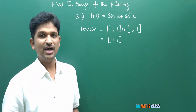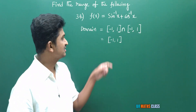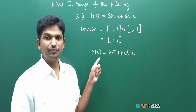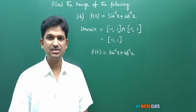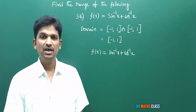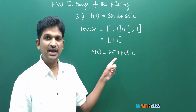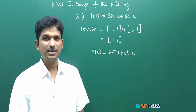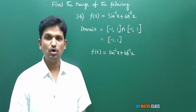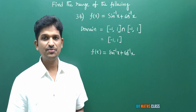So the domain of sin⁻¹x + cos⁻¹x is the closed interval [−1, 1]. To find the range, we use the property from inverse trigonometric functions: sin⁻¹x + cos⁻¹x = π/2 for any x in its domain. So we can say the range of this function is π/2.